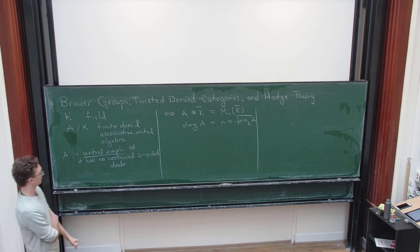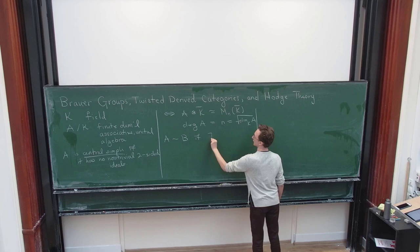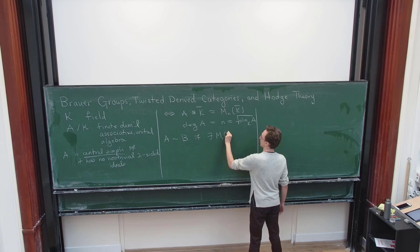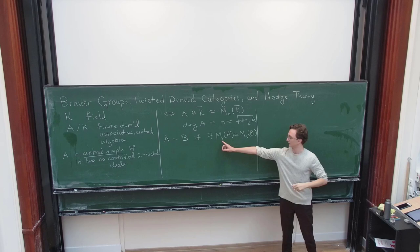And there's a nice way to sort of classify these central simple algebras up to an equivalence relation. And so we say that A and B are equivalent if, and let me not write out all the quantifiers, but we just want an isomorphism between some matrix algebra with entries in the algebra A and some other matrix algebra, possibly a different size, with entries in B. So there exists an integer R and an integer S.